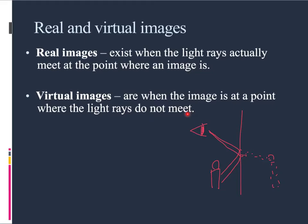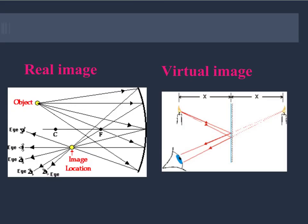Here's another example. With a curved mirror, if this is the object, the light rays all reflect off the mirror and come back to a single point. We can actually see an image there, and the light rays actually meet there — that makes it a real image. You could hold up a piece of paper there and see the image. Whereas with a virtual image, we see the object at a point even though the light rays don't actually go to that point.